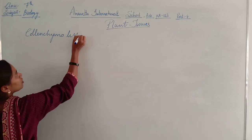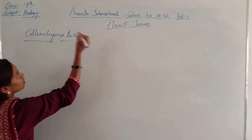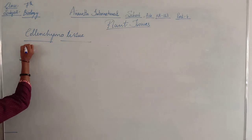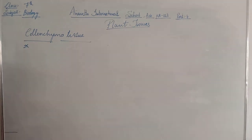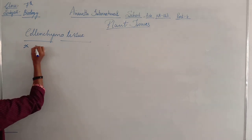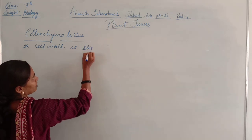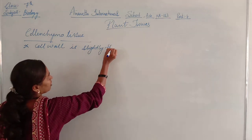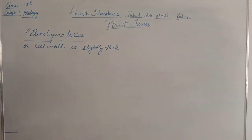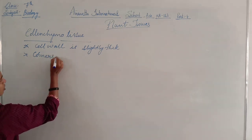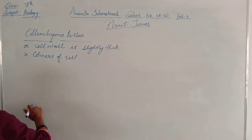Collenchyma tissue. In collenchyma tissue, as we all know, the parenchyma tissue has a thin cell wall. But compared to parenchyma cells, in collenchyma the cell wall will be slightly thick — specifically at the corners of the cells, the cell wall is thick.